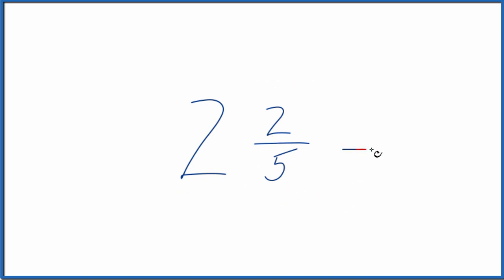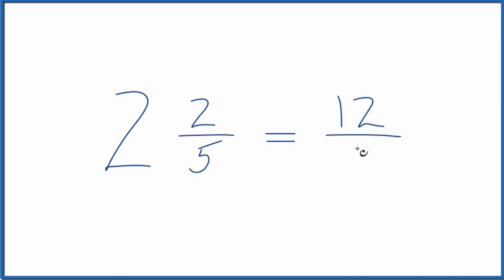But we want an improper fraction. And here's how you do it. You take the whole number, 2 here, and multiply it by the denominator, 5. 2 times 5, that gives us 10. Then we add that to the numerator. 10 plus 2 gives us 12. And we just bring across the denominator, 5.